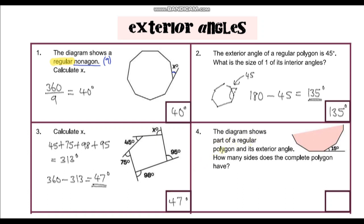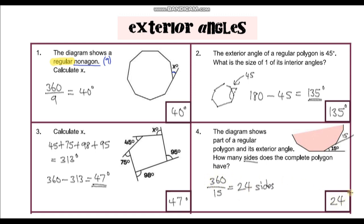Question four: the diagram shows part of a regular polygon and its exterior angle is 15 degrees. How many sides does the polygon have? Since it's regular, all exterior angles are 15 degrees. We know they all sum to 360 degrees, so we do 360 divided by 15, which gives us 24. That means there are 24 sides to this polygon.